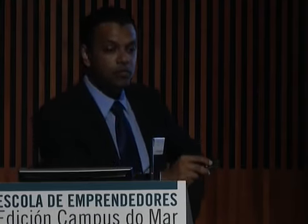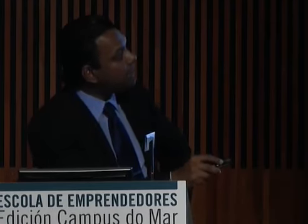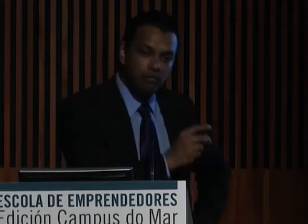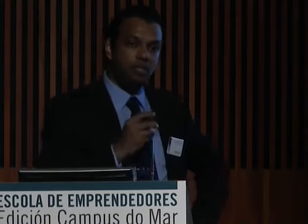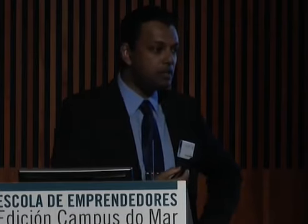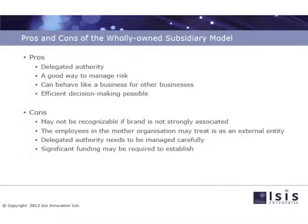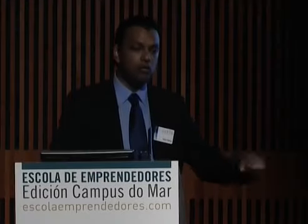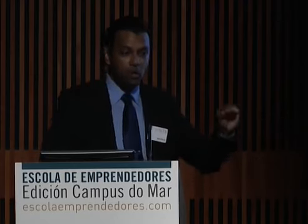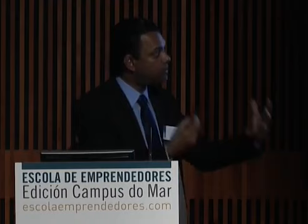Technology transfer involves a lot of risks as well. ISIS can behave like a business for other businesses — that's a very important point, because a lot of businesses are quite skeptical about dealing with universities since they are large, slow-moving organizations. They are much happier to deal with another business that acts very fast and speaks their language. That's why Oxford created ISIS as a company. And efficient decision-making is quite possible because there is delegated authority — transferred authority from the university in order to make decisions.